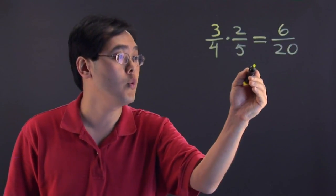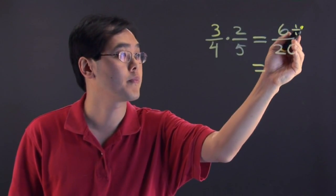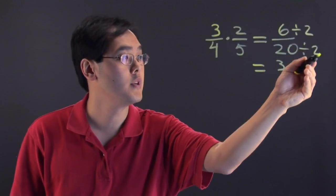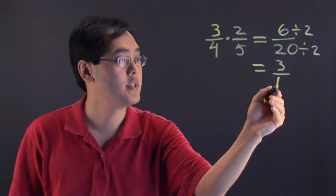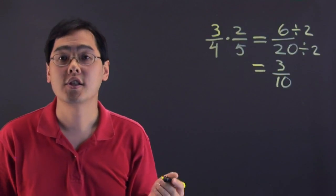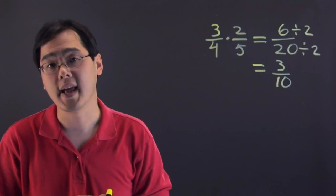So what you can think about is well 6 divided by 2 is going to give you 3 and 20 divided by 2 is going to be 10. So 6 twentieths is another way of saying 3 tenths. Just to keep in mind if you reduce numbers you have to reduce both the numerator and the denominator.